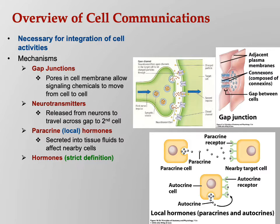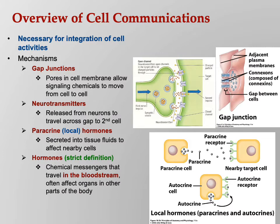Hormones is what we're going to be talking about now in the endocrine system. We're going to use a really strict definition here: hormones travel in the blood. The other ones don't. Now we'll see there's kind of an exception — some neurotransmitters are released directly into the blood, and we call them neuroendocrine hormones.